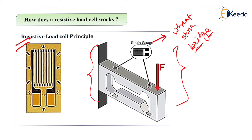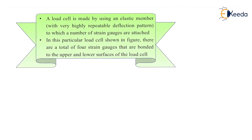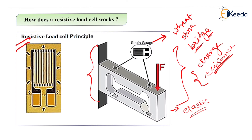As seen in the working principle, whatever voltage is applied gives us a change in resistance. To get that change in resistance, strain gauges are used, and force is applied to the load cell. When force is applied, the load cell changes its resistance. The load cell is an elastic type, meaning it can deform. A load cell is made up of an elastic member with a highly repeatable deflection pattern — it can deflect with the applied force.